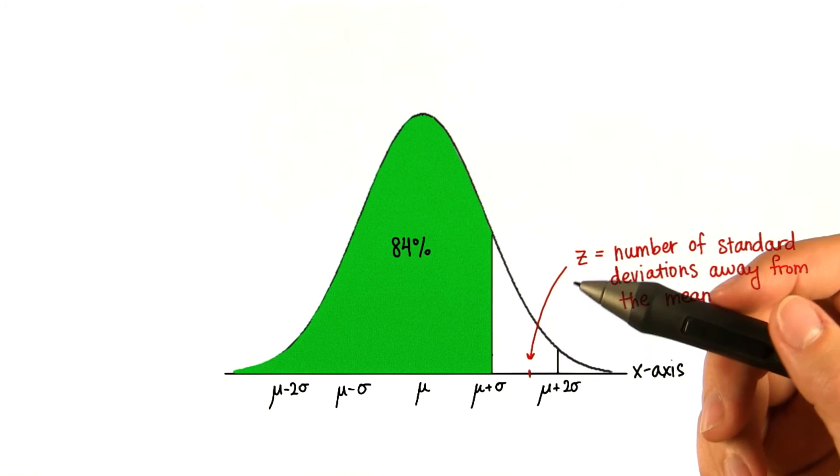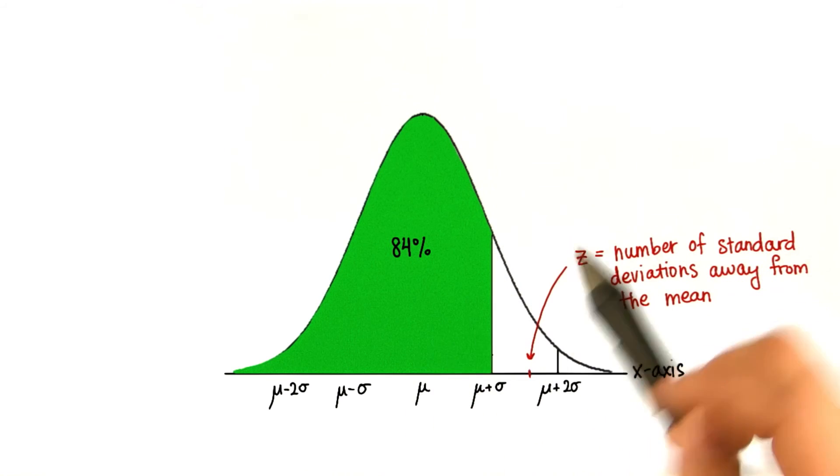In the next lesson, you'll learn how to calculate the proportions less than or greater than certain values in a normal distribution.